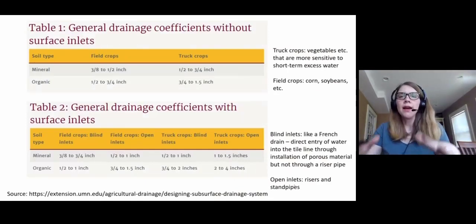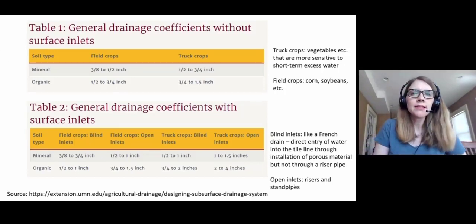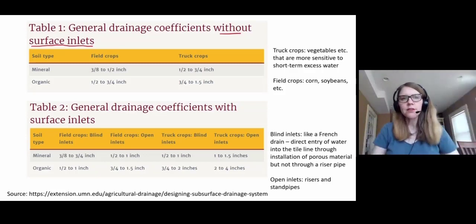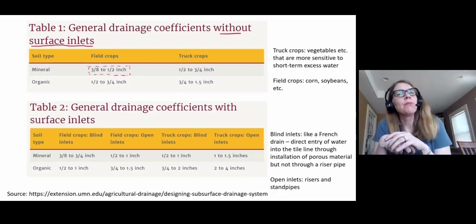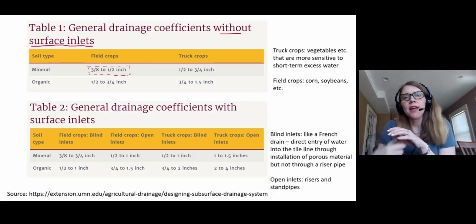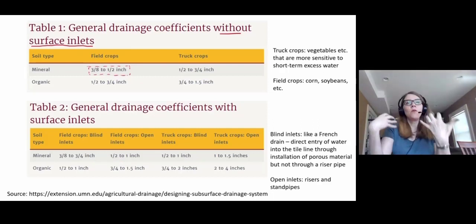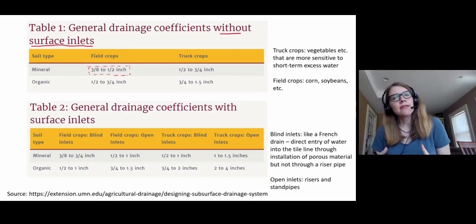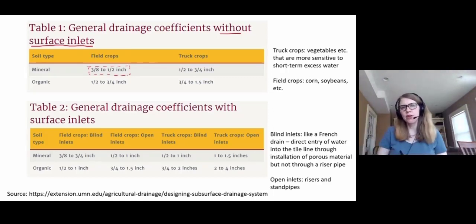So here are some examples of drainage coefficients for different scenarios. In this table here we've got without surface inlets. So this would be just tile lines buried under the ground, not connected to the surface. So we see that those field crops on a mineral soil, this is mostly where we are going to be working, we have three-eighths to one-half inch per day of drainage coefficient. And then those organic soils that have a lot higher capacity to take water in, we're going to have a higher drainage coefficient. And then if we've got truck crops that are more sensitive to high water content, we want to get water out of there faster, so we're going to have a higher drainage coefficient.